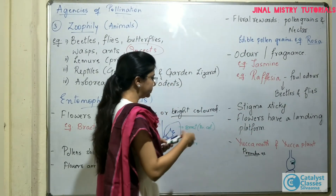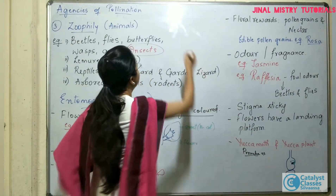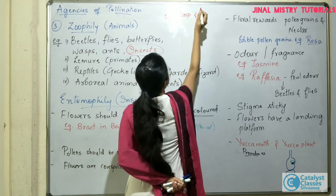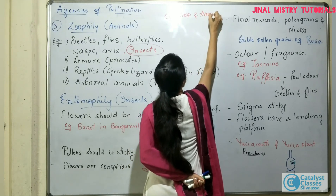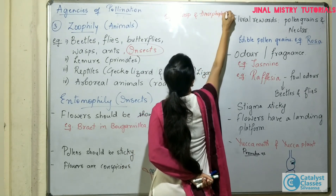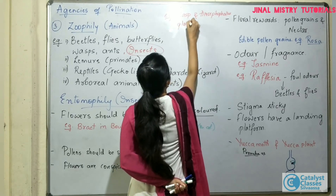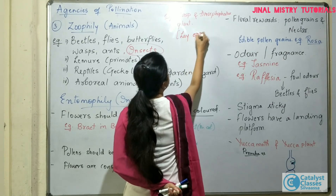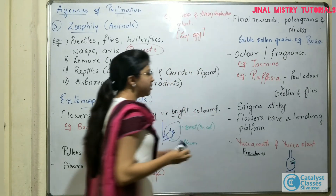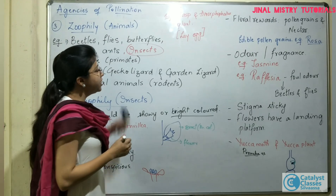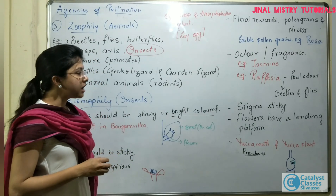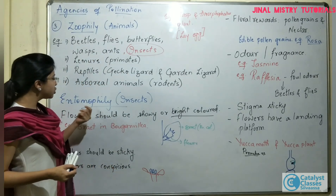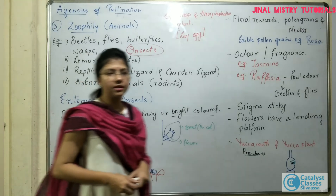Another example of a mutual relationship is that between the wasp and the Amorphophallus plant. In both these cases, the flower is providing a safe place for the insect to lay its eggs. These are the different characteristics of plants which are to be pollinated by insects, and this type of pollinating mechanism is called entomophily. Thank you.